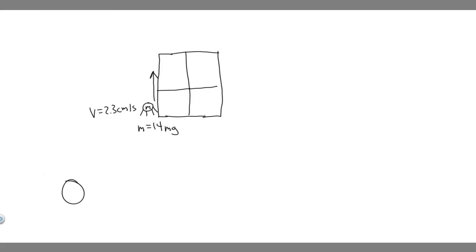In this problem, we're told to calculate the power output of a 14 milligram fly as it walks straight up a window pane at 2.3 centimeters per second.